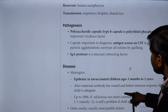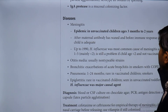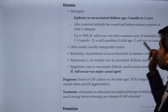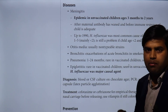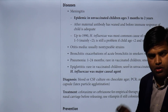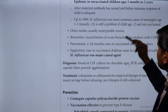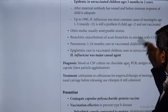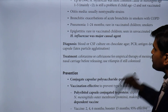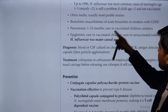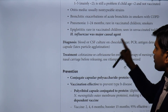Meningitis is common in epidemic outbreaks in unvaccinated children aged 3 months to 2 years — the period after maternal antibody has waned and before the child's own immune response is adequate. Up to 1990, Haemophilus influenzae was the most common cause of meningitis in children aged 1-5. Otitis media is usually caused by non-typeable strains. Bronchitis exacerbation occurs in smokers with COPD. Epiglottitis is rare in vaccinated children but is an acute emergency in unvaccinated children caused by type B.